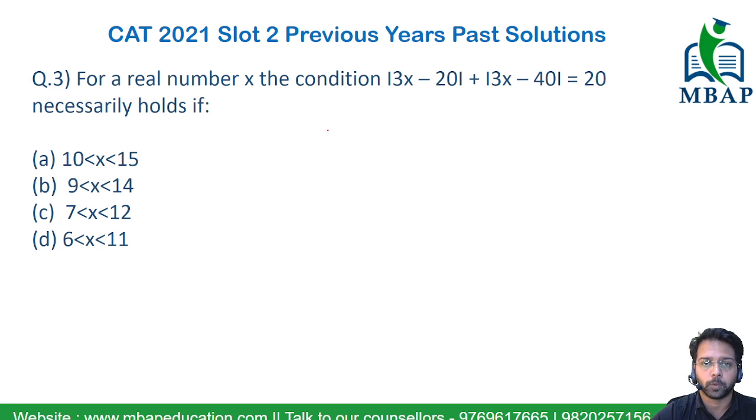This question possibly you can simplify first of all by assuming 3x to be a constant equal to y. Now, the whole expression can look like y minus 20 plus y minus 40 should be equal to 20.